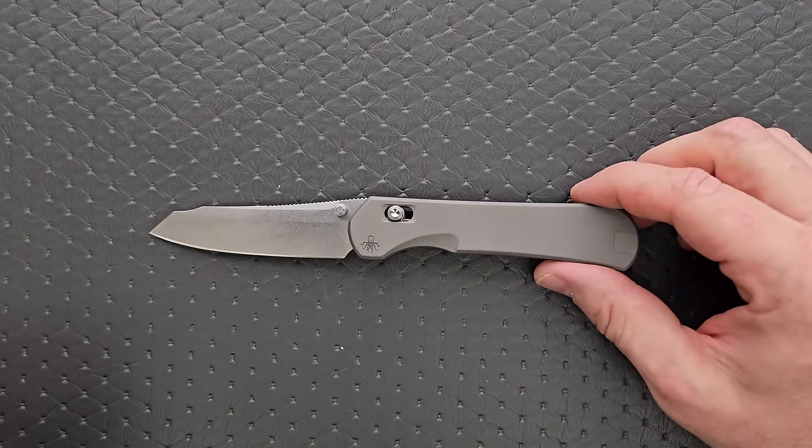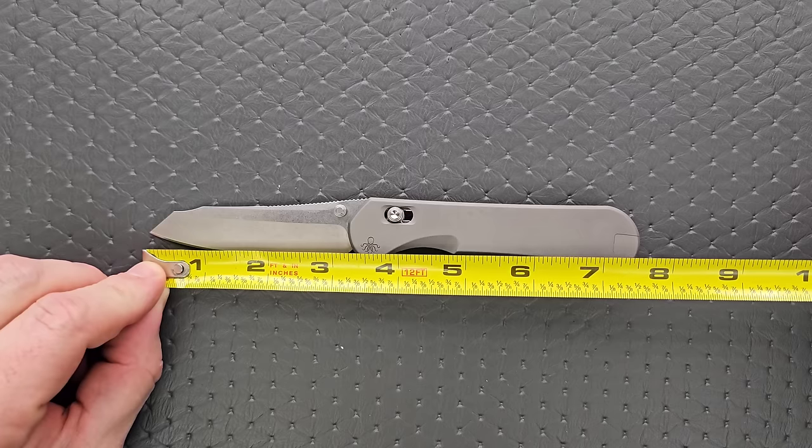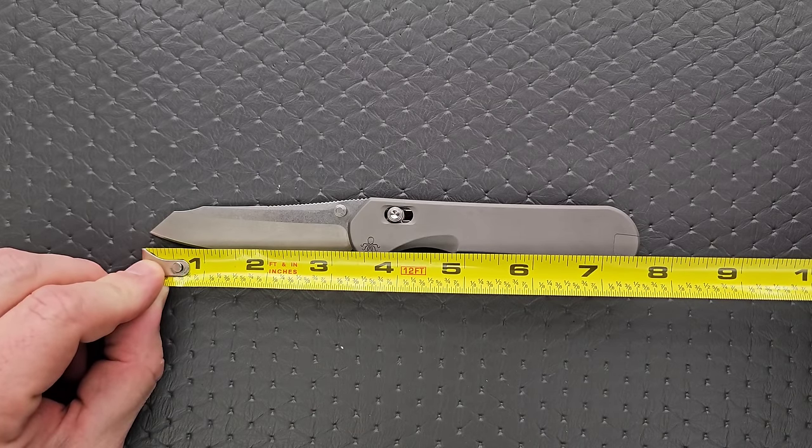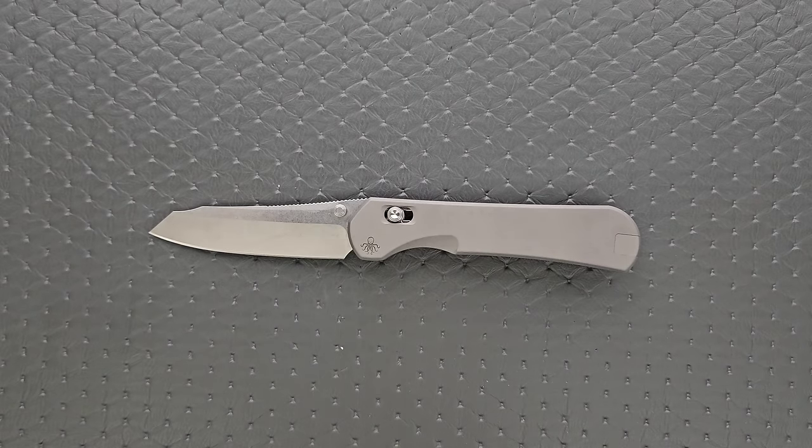Let's go ahead and get some specs and measurements here. Overall length of the Kraken coming in at about 7.65 inches. Blade length, 3 1⁄4 on the dot. Cutting edge, 3 1⁄8 on the dot.